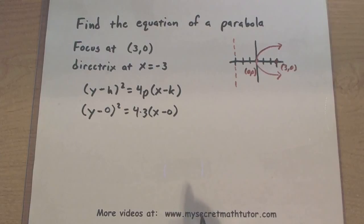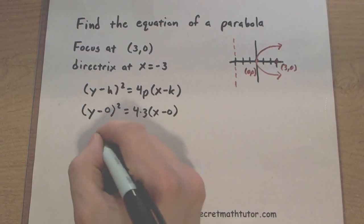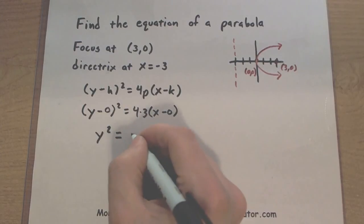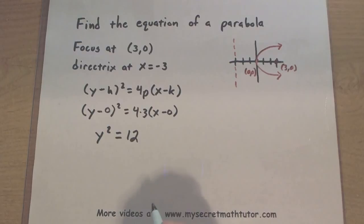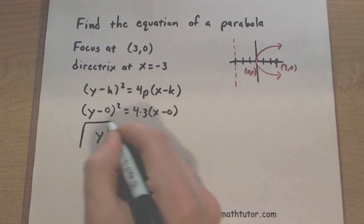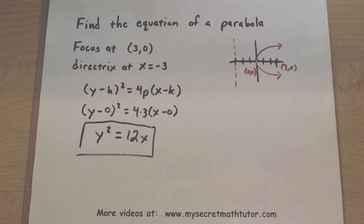And now we can really just start to simplify this. So y minus 0 is just y. This will give me y squared on that side. 4 times 3, 12. And x minus 0, just x. This tells me that my entire equation is y squared equals 12x.